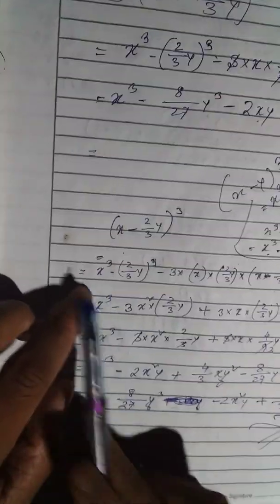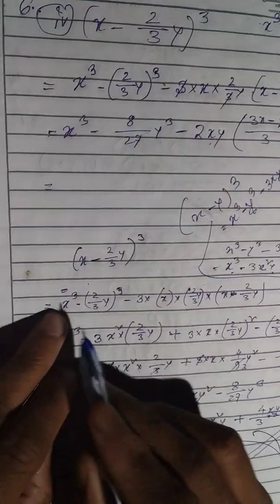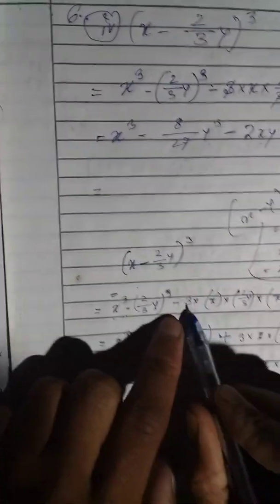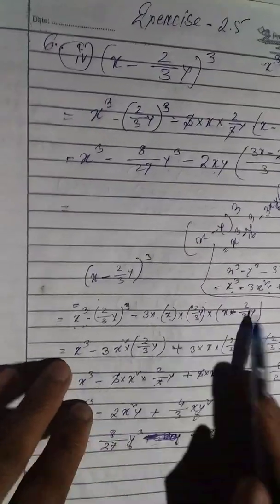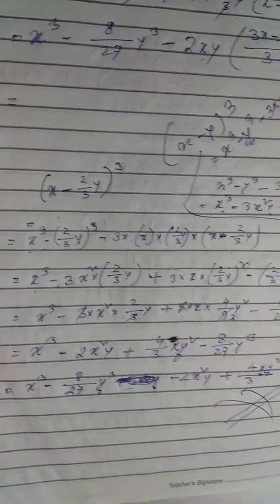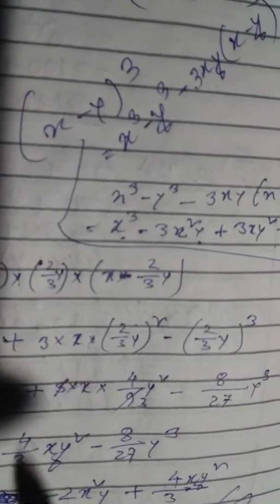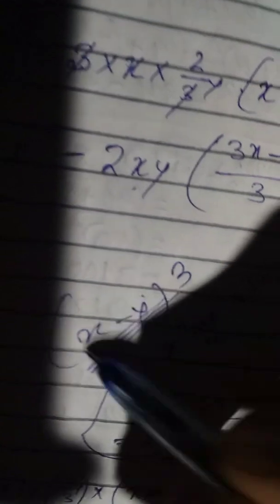I have solution. X minus 2 by 3 Y whole cube is equal to X cube minus 2 by 3 Y whole cube minus 3 into X into 2 by 3 Y into X minus 2 by 3 Y. Minus 2 by 3 Y whole cube, that means 2 cube by 3 cube Y cube according to formula.